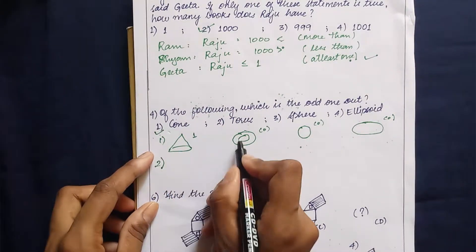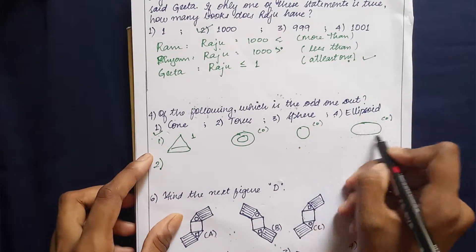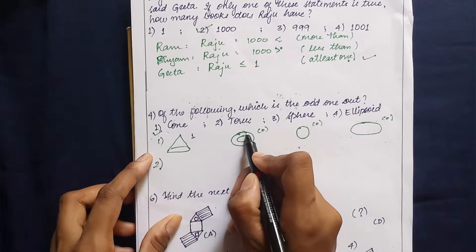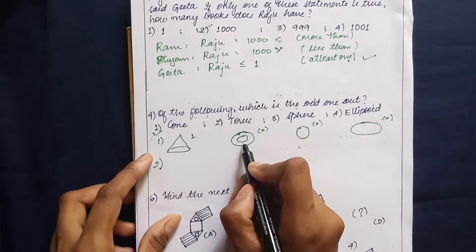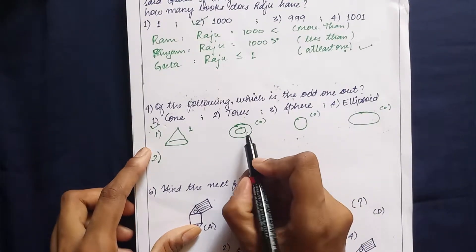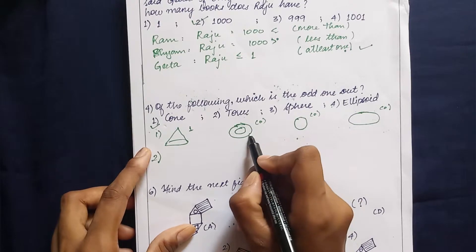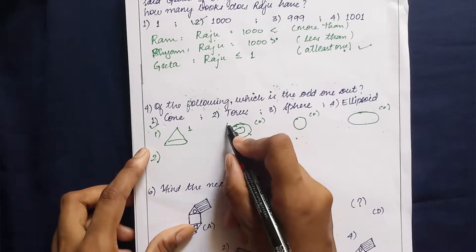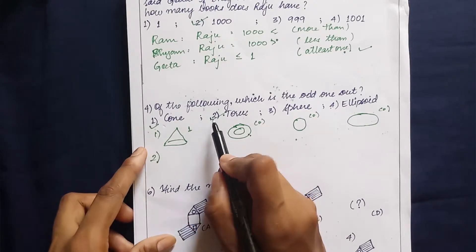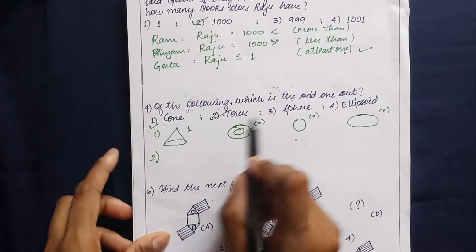Another method: considering a sphere, a sphere can be deformed into an ellipsoid or into a cone, but never into a torus. A torus is an incomplete solid in layman's terms and it is also proven mathematically that a torus cannot be constructed back into a sphere. So a torus is also an odd one out. Either cone or torus can be the answer, but while marking do not mark both options as it may lead to disqualification.